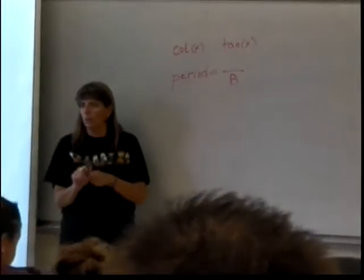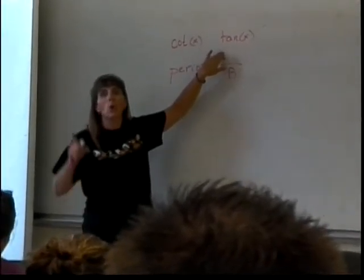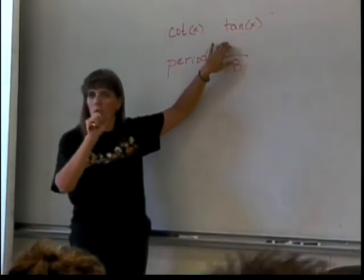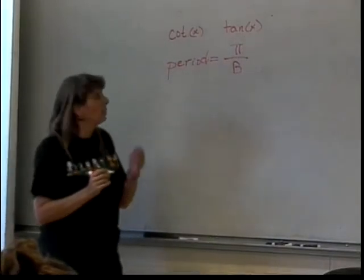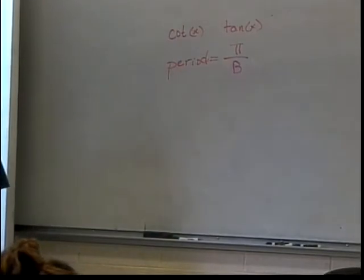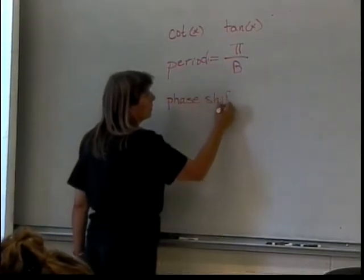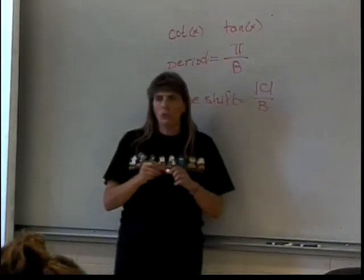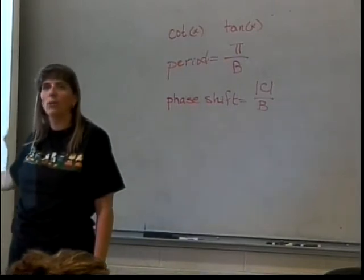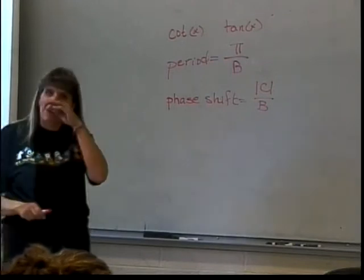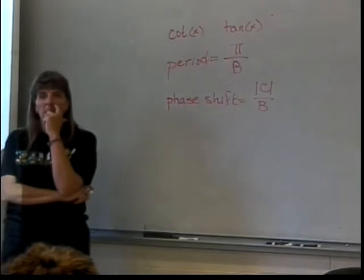For sine and cosine the original period was 2π, giving 2π over B. For tangent and cotangent the original period is π, so the period equals π over B. The C term produces a phase shift — left or right — equal to the absolute value of C over B. It's best to graph these without relying on phase shift formulas since they get messy. D moves the graph up and down vertically.